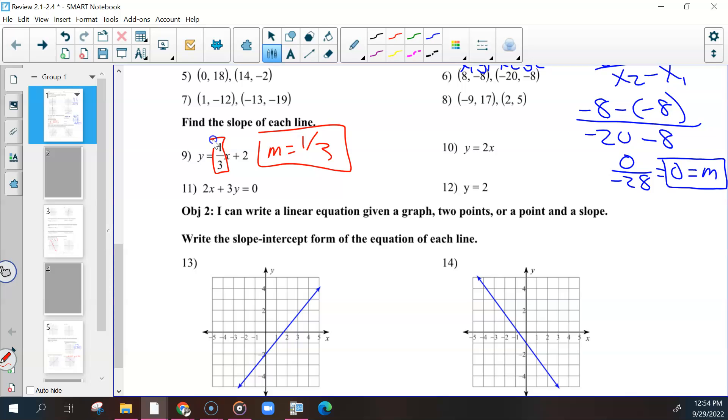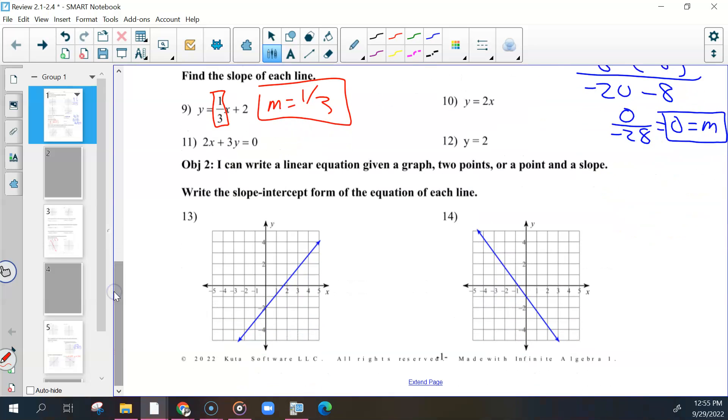For twelve, this is a y equals a number. If you have to write that ten times throughout your quiz, do it. So if this is a y equals and we're looking for slope, your slope is zero. M equals zero would be your answer.